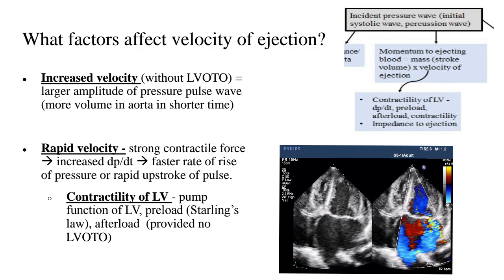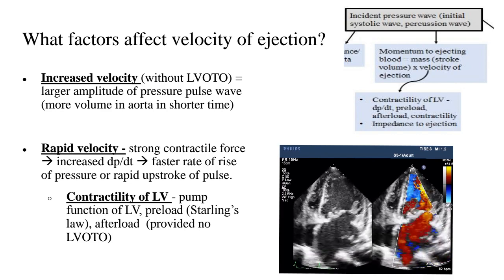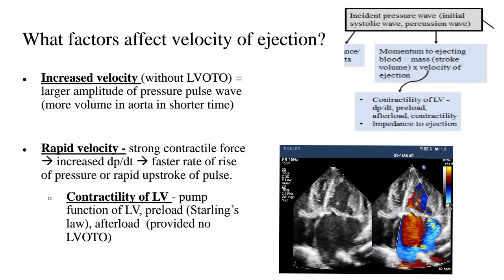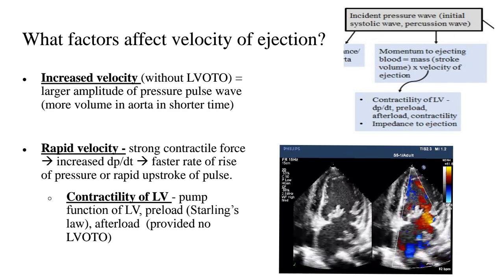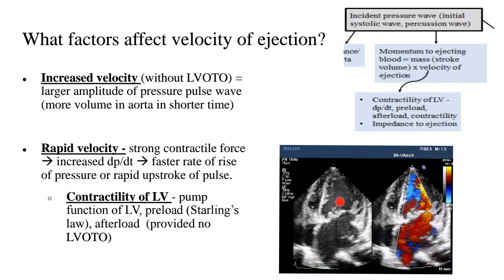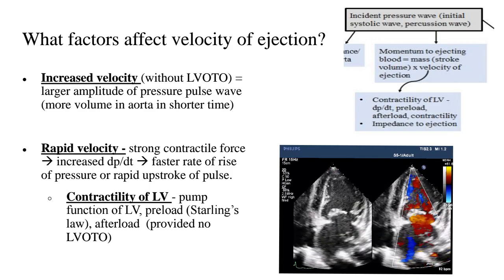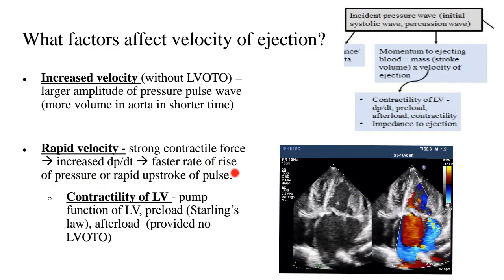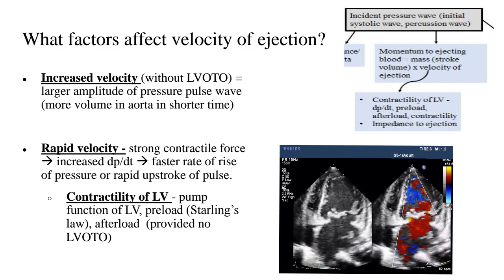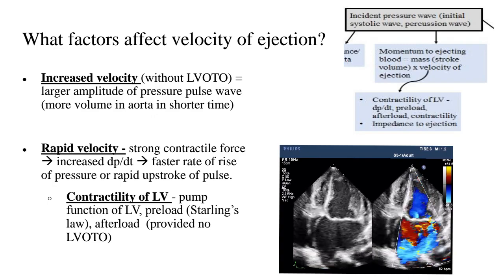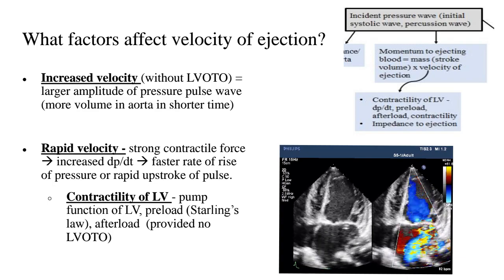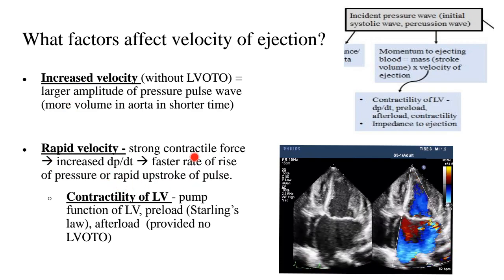Let me use mitral regurgitation to illustrate the difference between amplitude and rapidity of the upstroke. In mitral regurgitation, there is increased contractility due to Starling's law, because the left ventricle receives increased filling both from normal pulmonary venous return and from the volume of blood that has regurgitated into the left atrium and returned to the left ventricle. Contractility is increased, giving a rapid upstroke. However, there is no increase in stroke volume because the left ventricle has two outlets during systole — the aorta and the left atrium. Hence in severe mitral regurgitation, the amplitude is expected to be normal but the rate of rise is rapid.